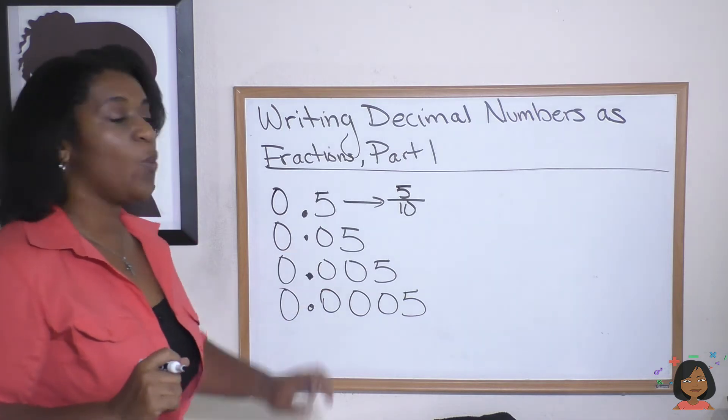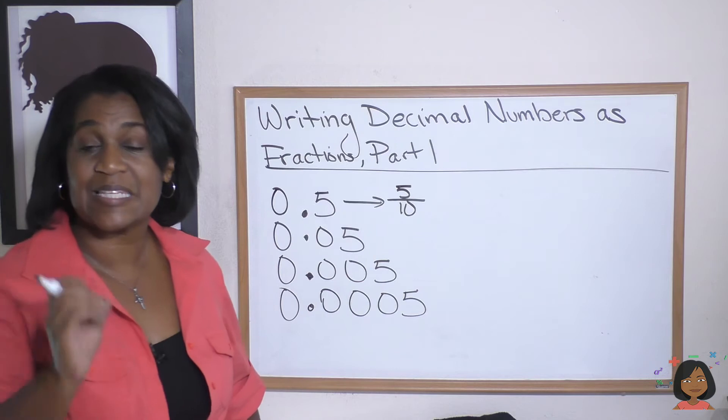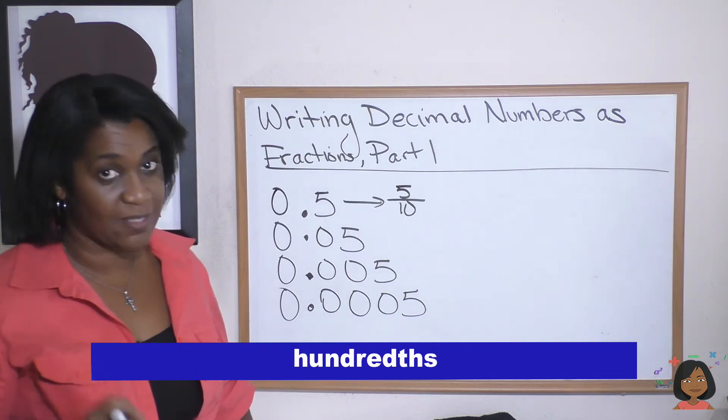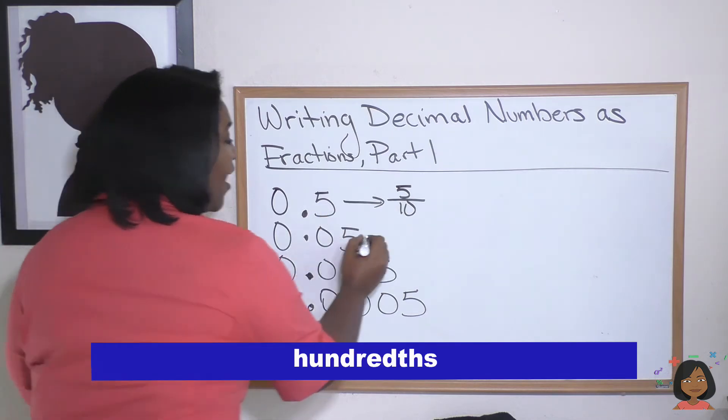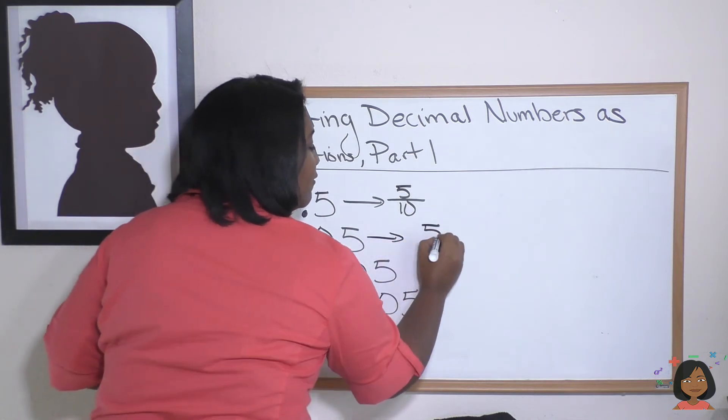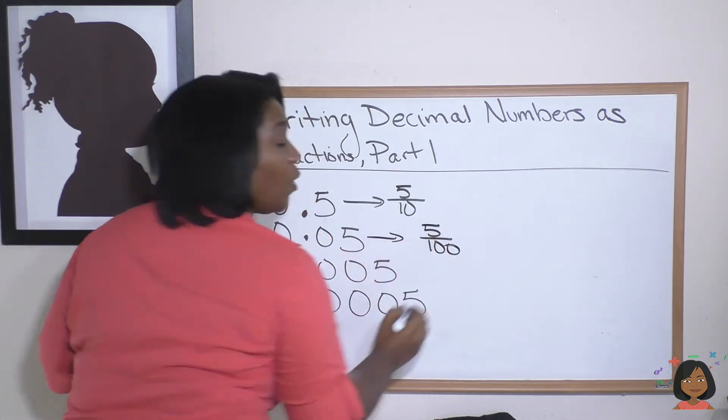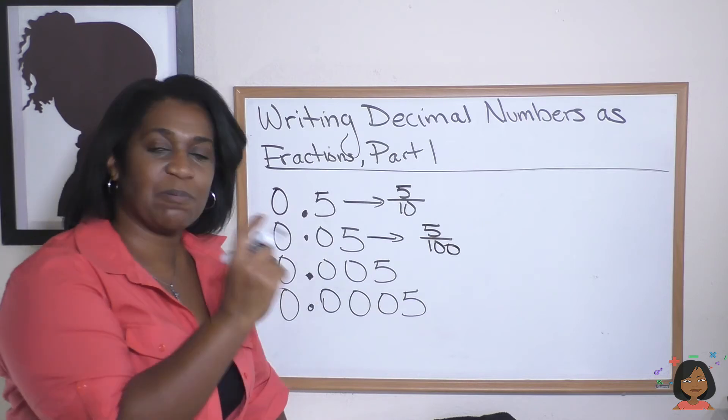What place is the five in this time? It's in the hundreds place. That means we put our same five and we put it over 100, and then again we would simplify this fraction down to 1 over 20.